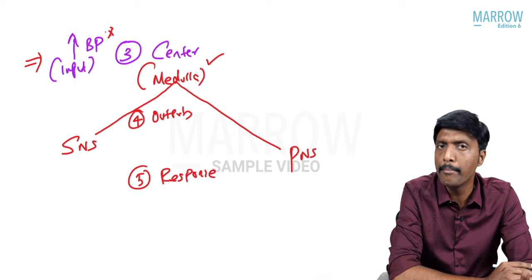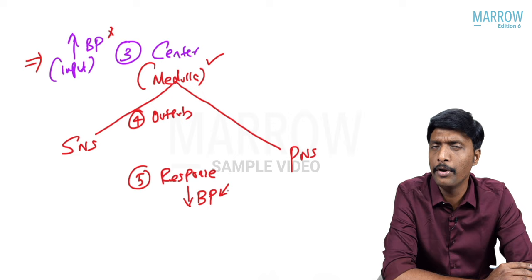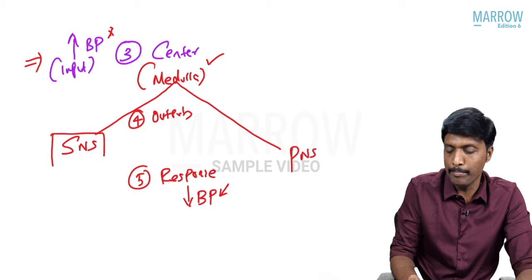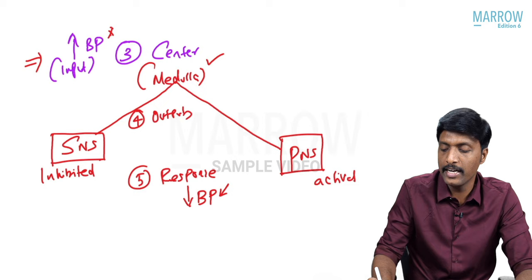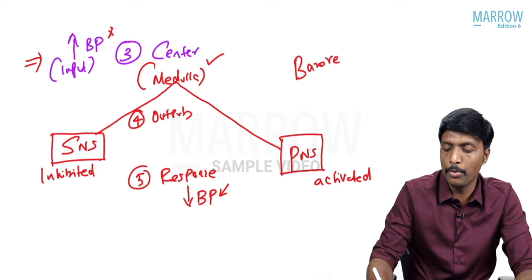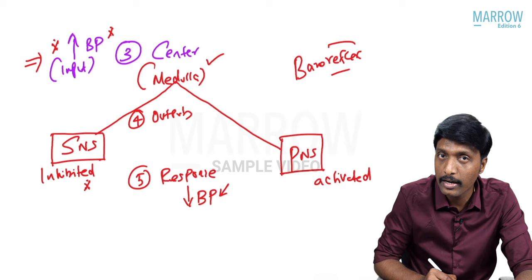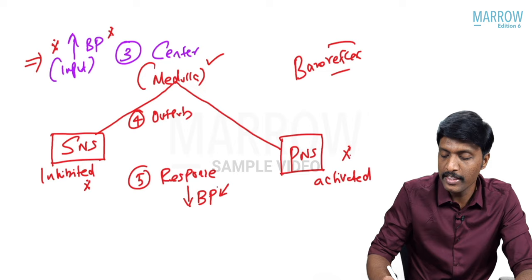Tell me — increase in blood pressure. Because of this reflex, the response is going to be decrease in blood pressure. If you activate which nervous system will BP fall? If you inhibit which nervous system will BP fall? To get the response of decreased blood pressure: our sympathetic nervous system will be inhibited in this reflex, and our parasympathetic nervous system will be activated. In response to increase in blood pressure, sympathetic inhibition happens and parasympathetic activation happens, giving decrease in blood pressure.